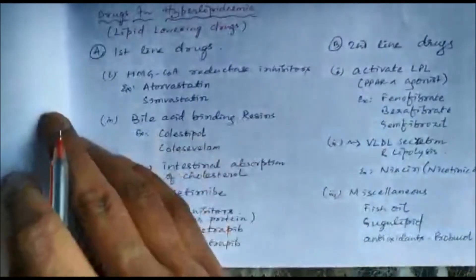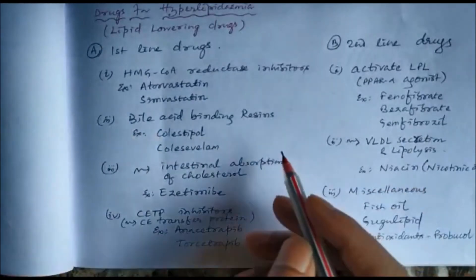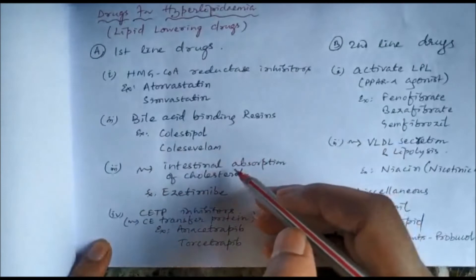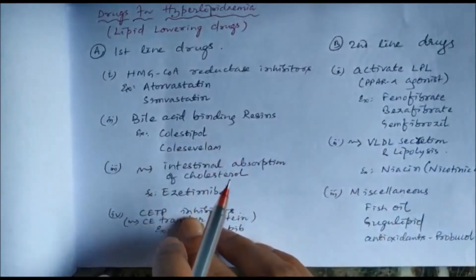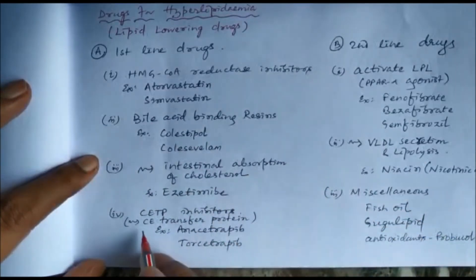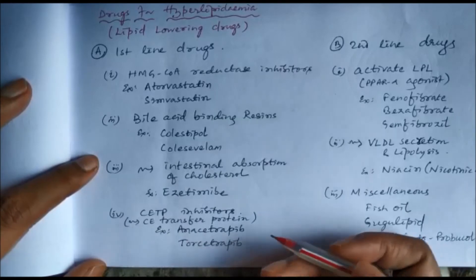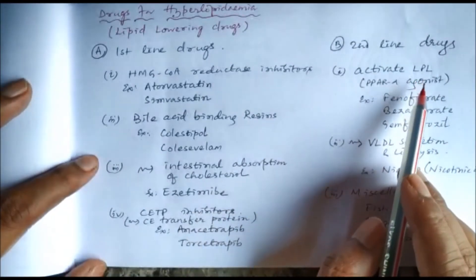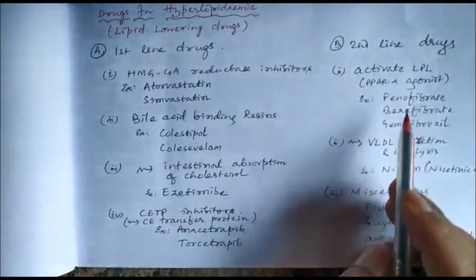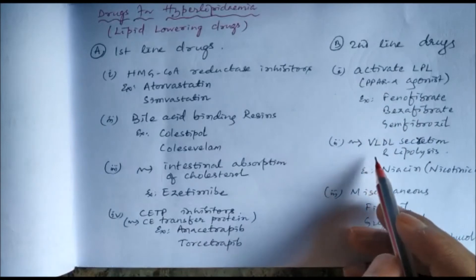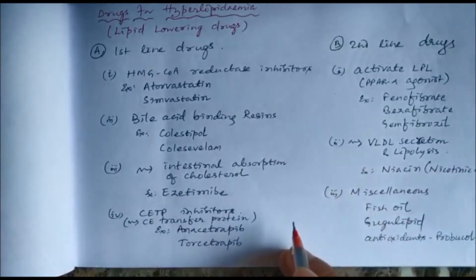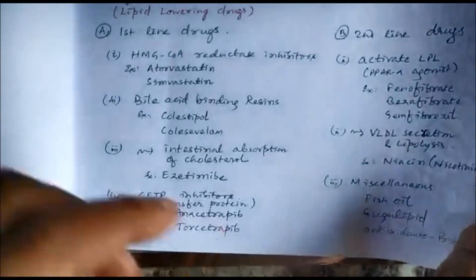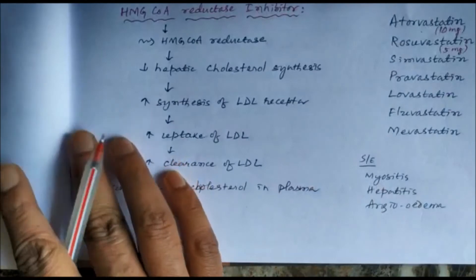Hyperlipidemia can be treated by lipid lowering drugs. First-line drugs are statins or HMG coenzyme A reductase inhibitors, bile acid binding resins like cholestipol and colesevelam, and drugs which inhibit intestinal absorption of cholesterol like ezetimib, and CETP inhibitors like anacetrapib and torcetrapib. The second-line drugs include drugs which activate lipoprotein lipase — the PPAR-alpha agonists like fenofibrate and bezafibrate — and drugs which inhibit VLDL secretion and inhibit lipolysis like niacin or nicotinic acid, and others like fish oil, gugulipid, and antioxidants like probucol.